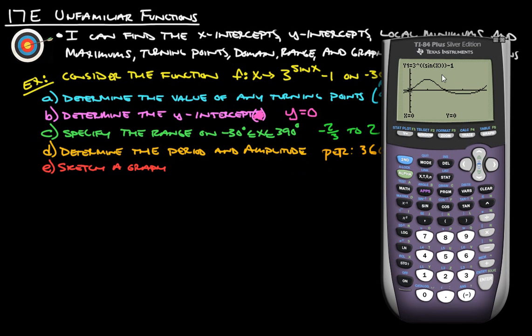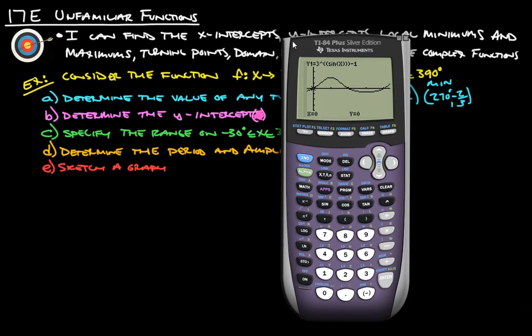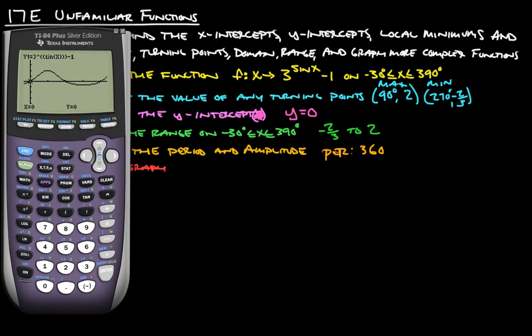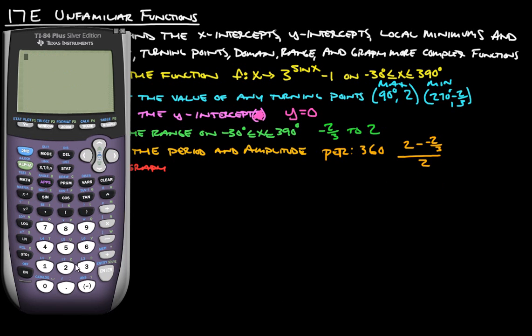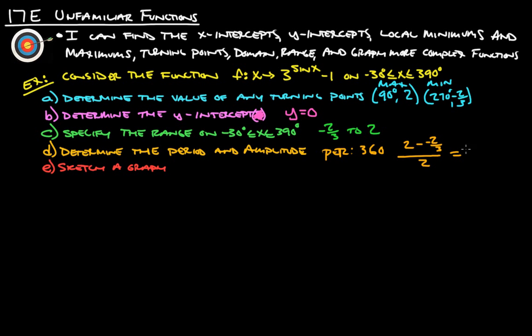So to figure out our amplitude, we just figure out, again, take half the distance from the top to the bottom. So it's basically whatever half of our range is, right? Let's do 2 minus negative 2 thirds all over 2. Let's use this. 2 plus 2 thirds. There's our 2 and 2 thirds, and we divide that by 2, and we're going to get 1 and 1 third. 1 and 1 third is the amplitude, and then there's our period, 360 degrees.